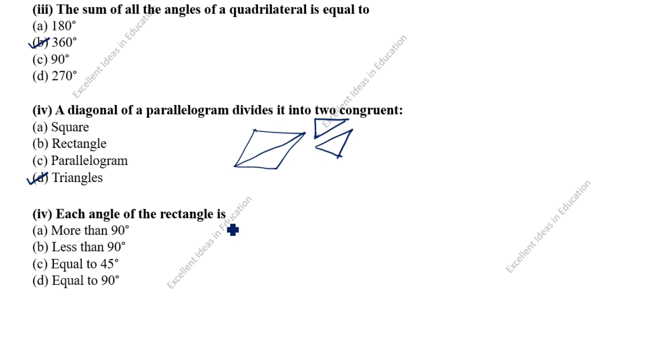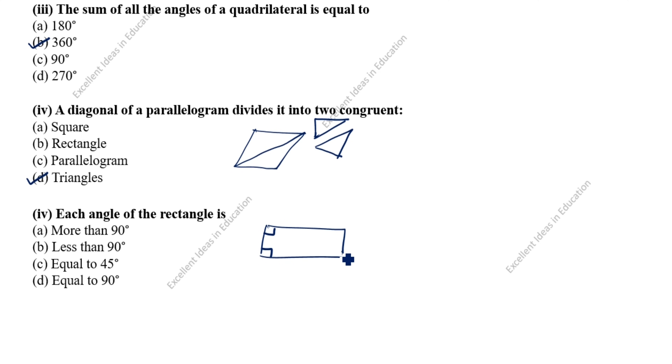Each angle of a rectangle: we will draw the rectangle. You see here each angle is 90 degrees — this angle is 90, this one is also 90, this one is also 90. So each angle of a rectangle is equal to 90 degrees.